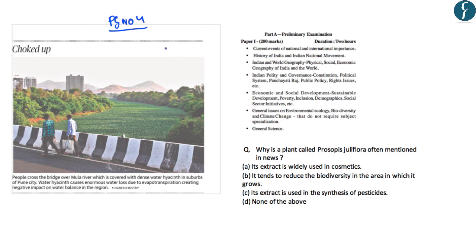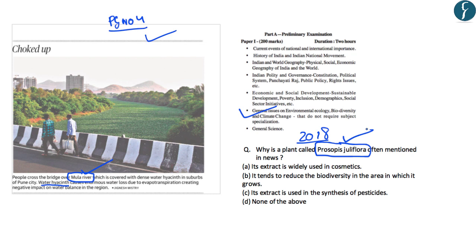The first snippet is on page number four and is related to an invasive species known as water hyacinth, which is impacting the Moola River in the city of Pune. This falls under the preliminary examination topic of general issues on environment and ecology. In 2018, there was a question related to prosopis juliflora, also an invasive species; the correct answer was that it tends to reduce biodiversity in the area in which it grows.